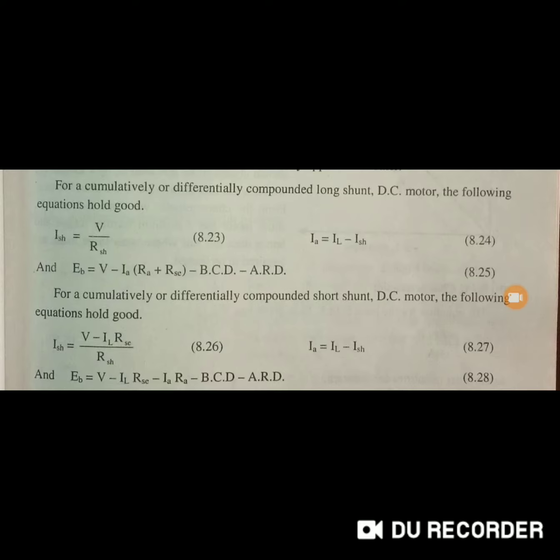For the cumulative or differential compound short shunt DC motor, the equation is given by I_SH is equal to V minus I_L into R_SE divided by R_SH. The I_A current is equal to I_L minus I_SH. The back EMF is given by V minus I_L into R_SE minus I_A into R_A.